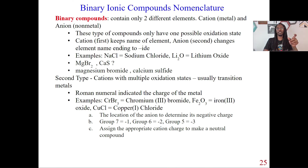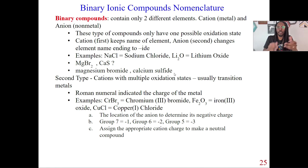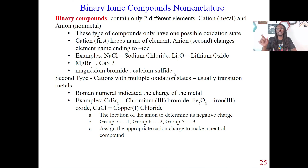Here are two more examples. MgBr₂ — magnesium is the cation, it stays the same; bromine is the anion, so we change it to 'bromide' — giving us magnesium bromide. Next, calcium sulfide — calcium is the cation and stays the same; sulfur is the anion, so we change 'sulfur' to 'sulfide'. That's how it works: cation first and unchanged, anion second with the ending changed to '-ide'.